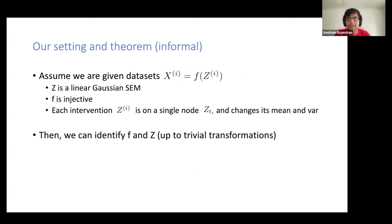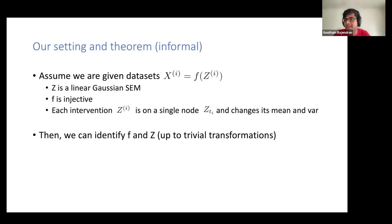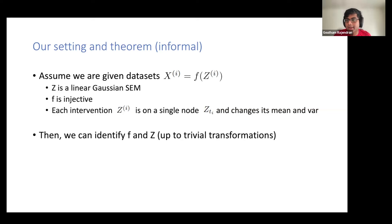I'm going to start with the punchline of this work. The idea is that we make the assumption that Z is a linear Gaussian structural causal model and F is an injective map. The injectivity is not a strong assumption — it's pretty standard in machine learning. The linear Gaussian structural causal model could be restrictive depending on the application, but we made the assumption because it still allows for fairly universal approximation capabilities. The other crucial assumption is that we have single node interventions on all targets.